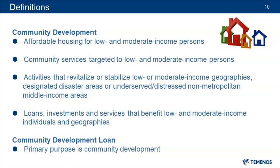Activities that promote economic development by financing businesses or farms that meet the size eligibility standards of the Small Business Administration's development company or Small Business Investment Company programs, or have gross annual revenues of $1 million or less, or activities that revitalize or stabilize low or moderate income geographies, designated disaster areas, or distressed or underserved non-metropolitan middle income geographies. These distressed or underserved non-metropolitan middle income geographies will be updated annually, and you can find that list on the FFIEC's website.